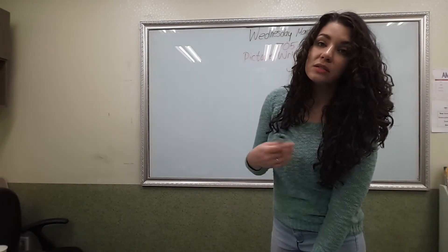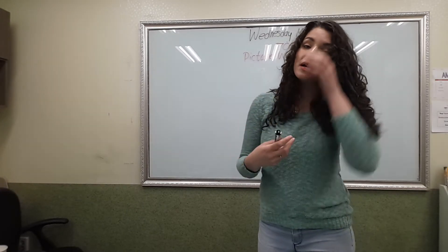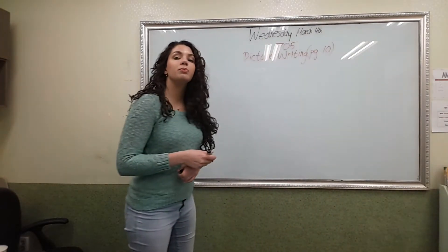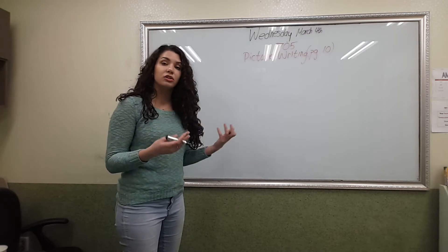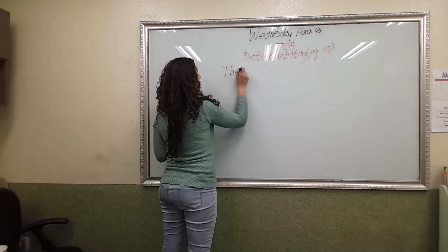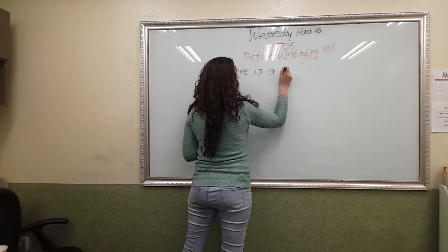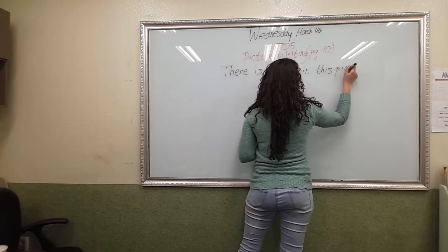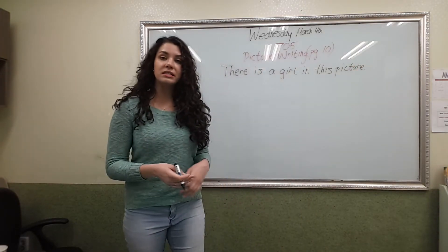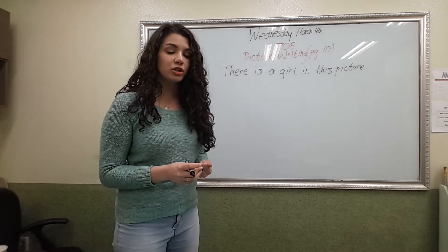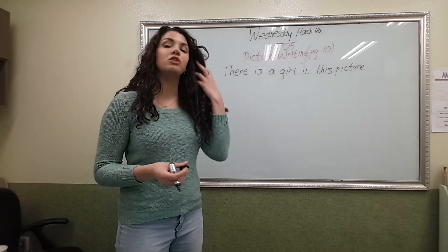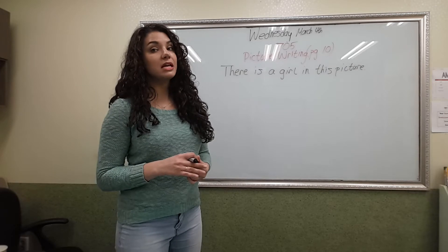I'm going to begin the same way every time. I always want you to talk about the person first because the person is always the most important part of any picture. So first we should describe the person in the story. We already said she is a girl, so we can say: 'There is a girl in this picture.' You can write it differently — 'I see a girl in this picture' or 'There is a young girl in this picture.' You can add more information if you want to.